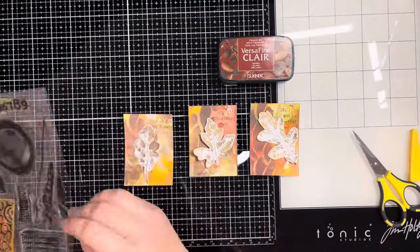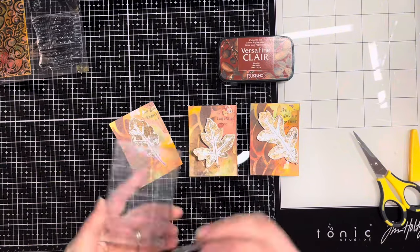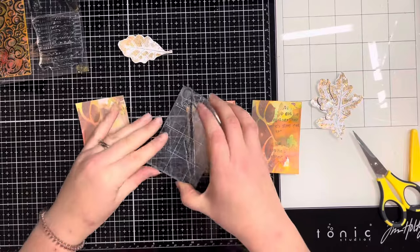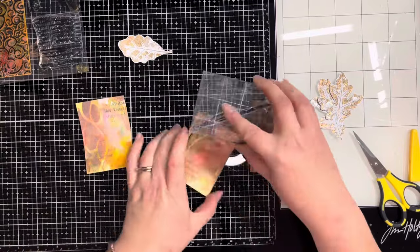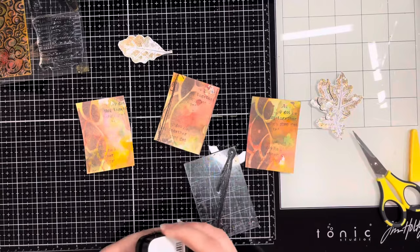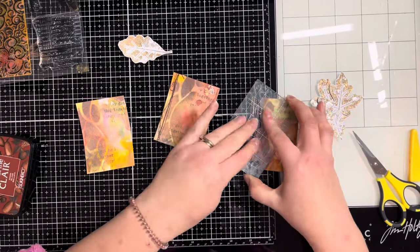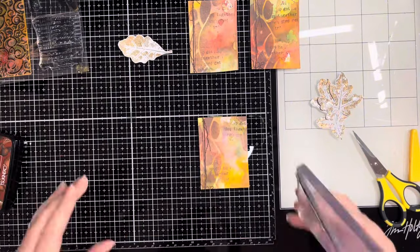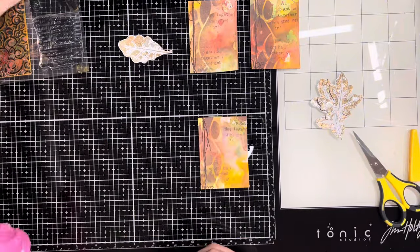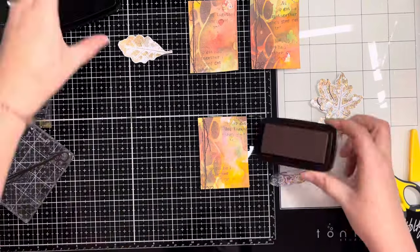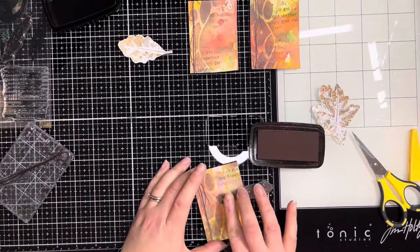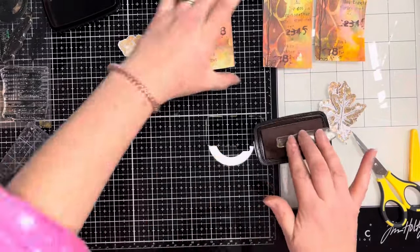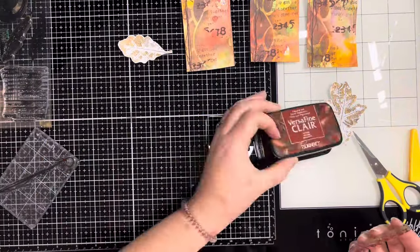Once they're all cut out I'm adding more stamping to the ATCs before sticking anything down. I've got the Mix It Up stamp set from Rubberdance and I'm inking up this stitched stamp with VersaFine Clair Acorn ink. This is a brown ink rather than black and it blends in nicely with the backgrounds. It's not as harsh as black and keeps that autumnal feel. I'm also using this little numbers stamp to add more background interest.